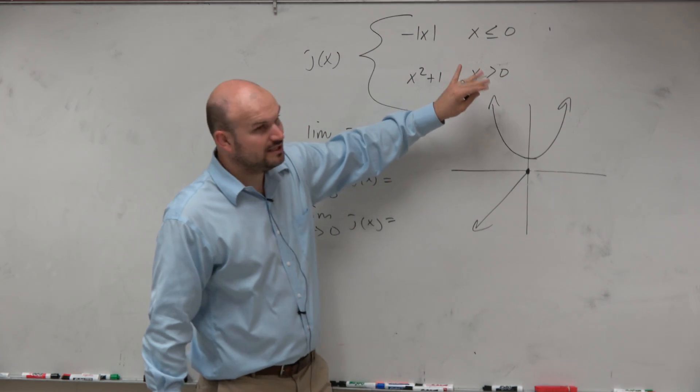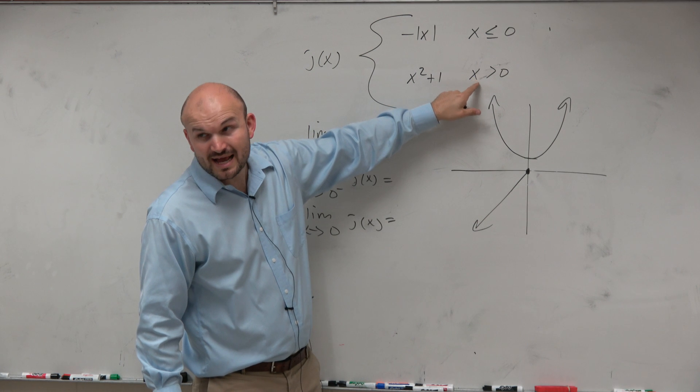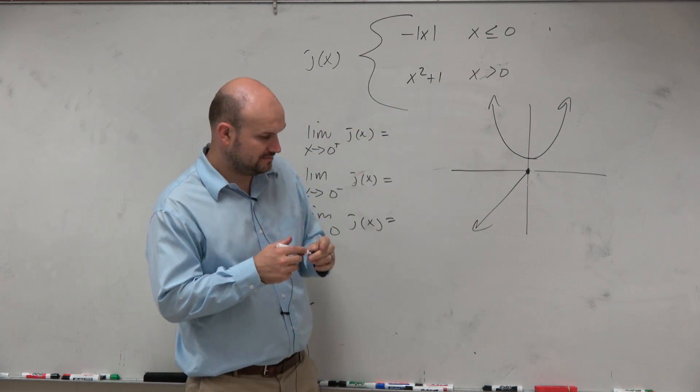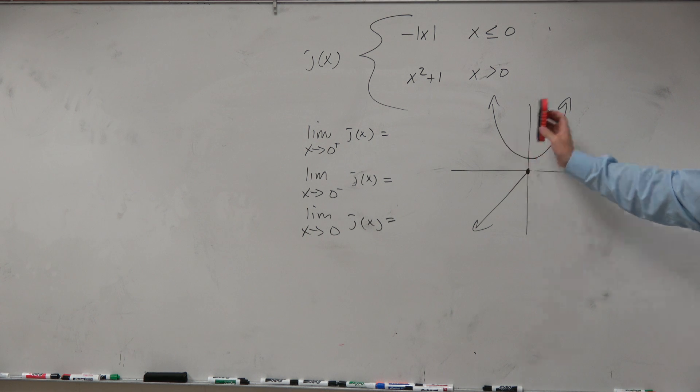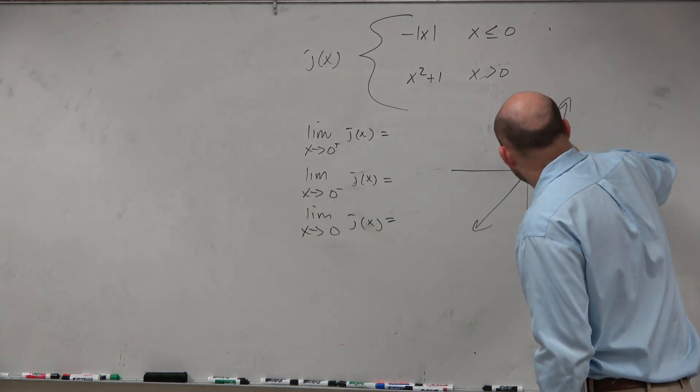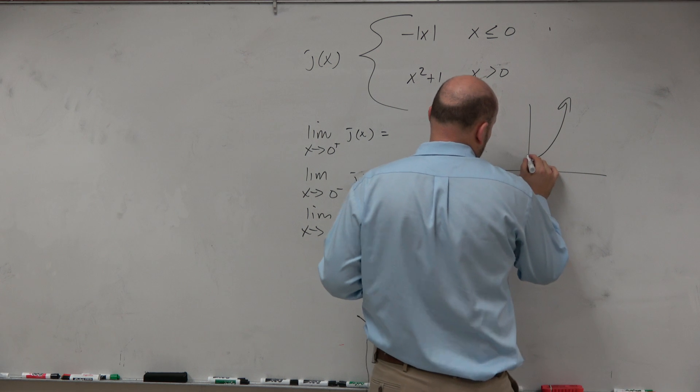However, this is saying only are we going to talk about this function for x is greater than 0. So everything, x is only greater than 0 for all values to the right of the y-axis. So I'm going to erase that, and I'm going to put a nice little hole there.